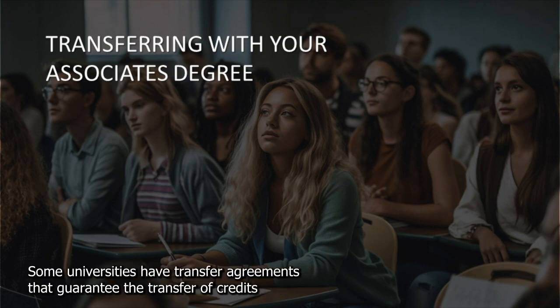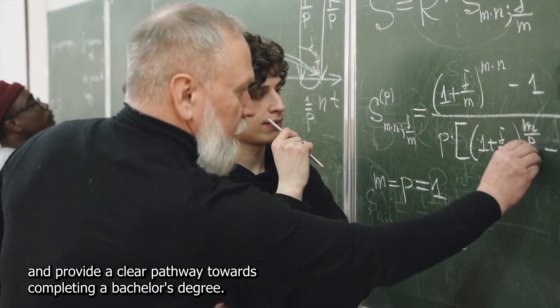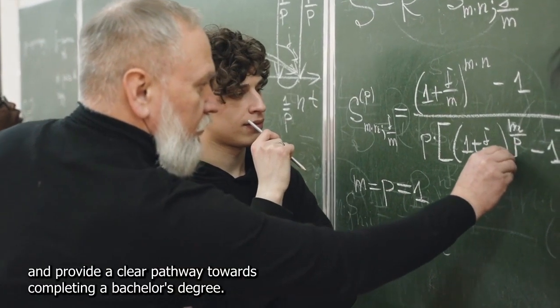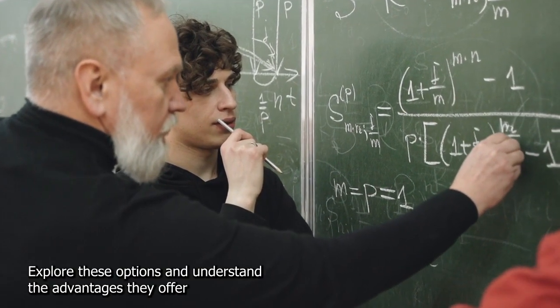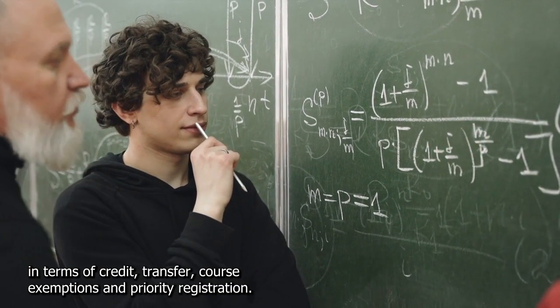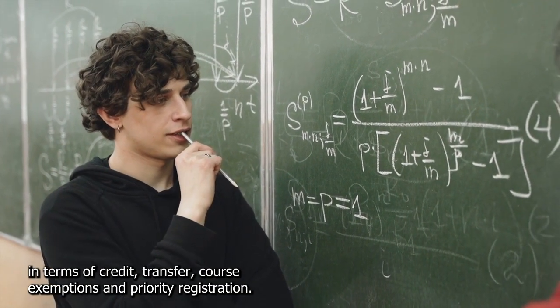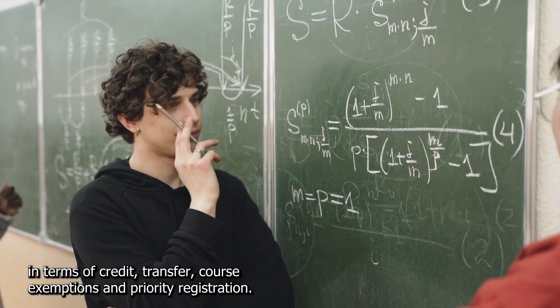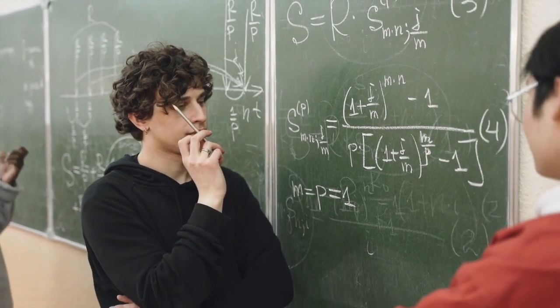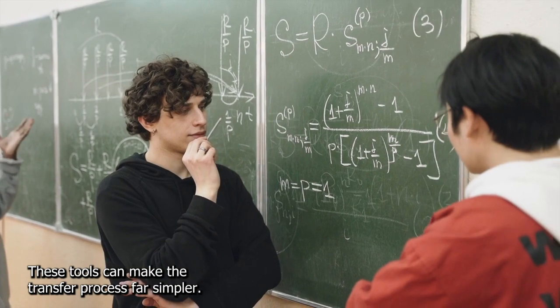Some universities have transfer agreements that guarantee the transfer of credits and provide a clear pathway towards completing a bachelor's degree. Explore these options and understand the advantages they offer in terms of credit transfer, course exemptions, and priority registration. These tools can make the transfer process far simpler.